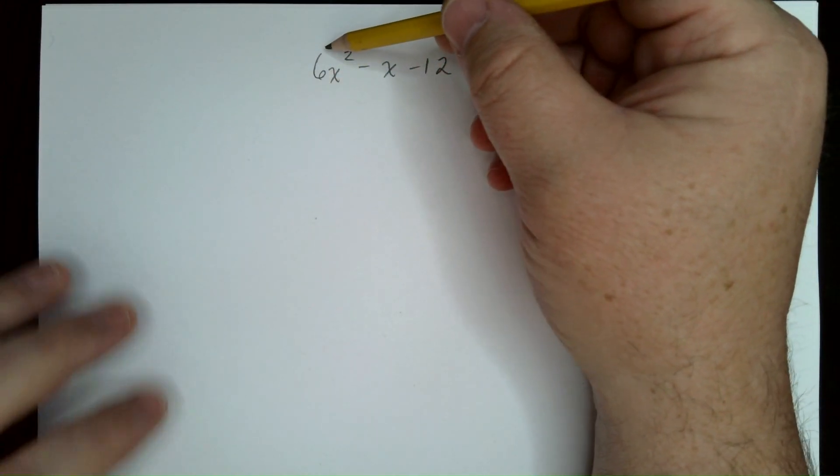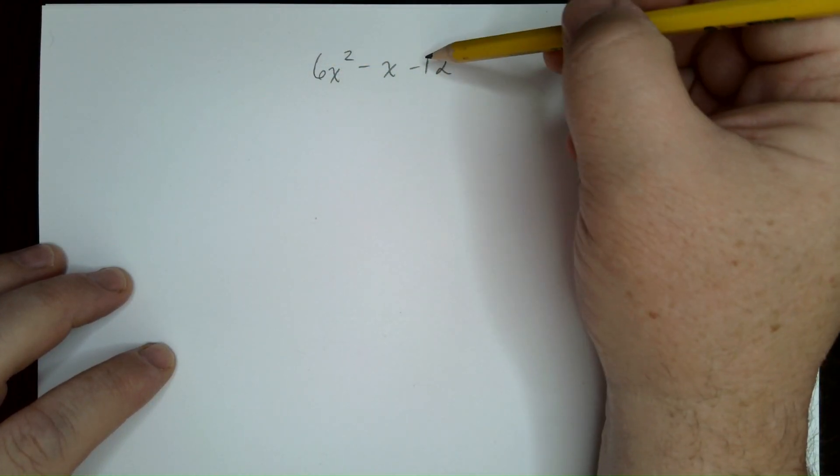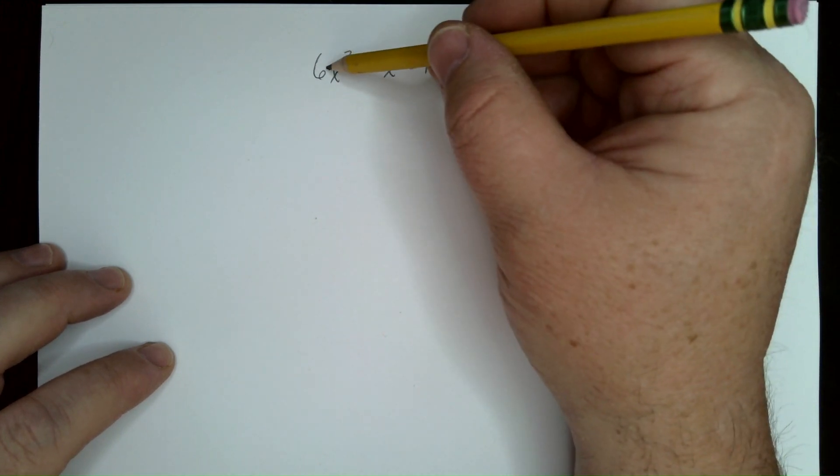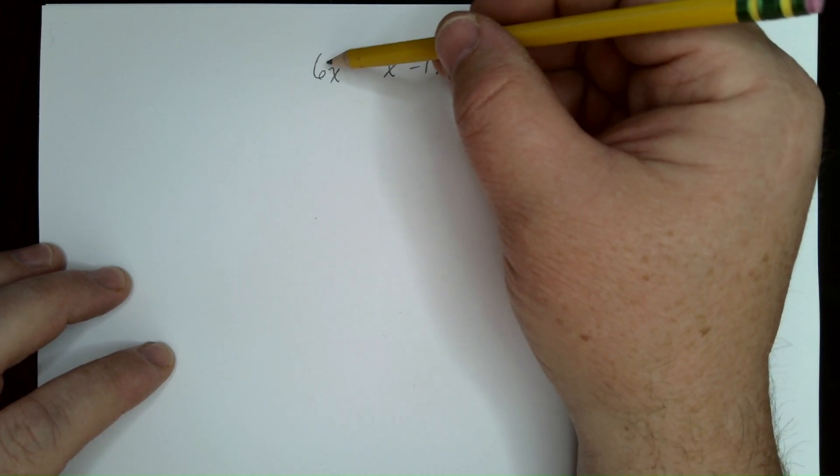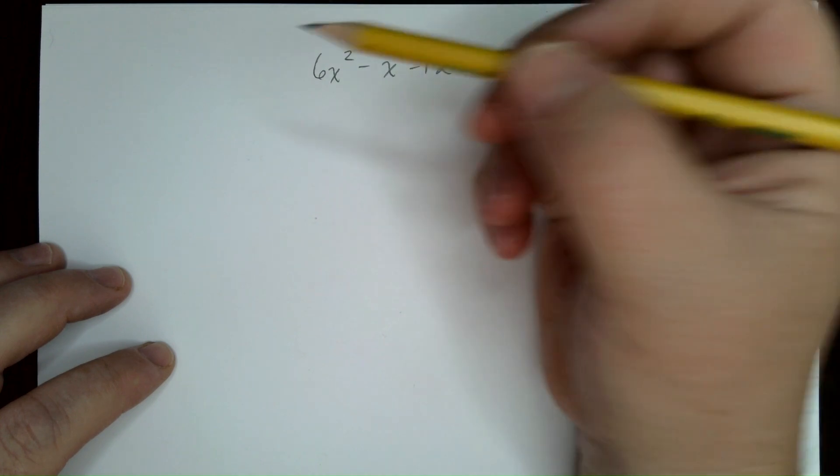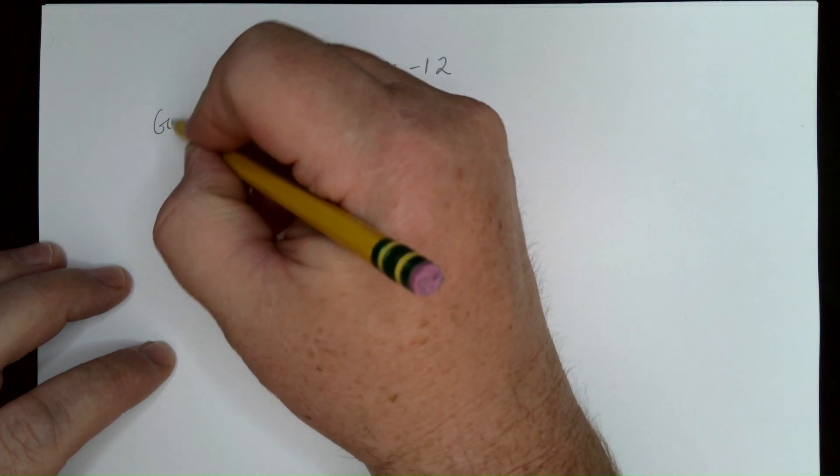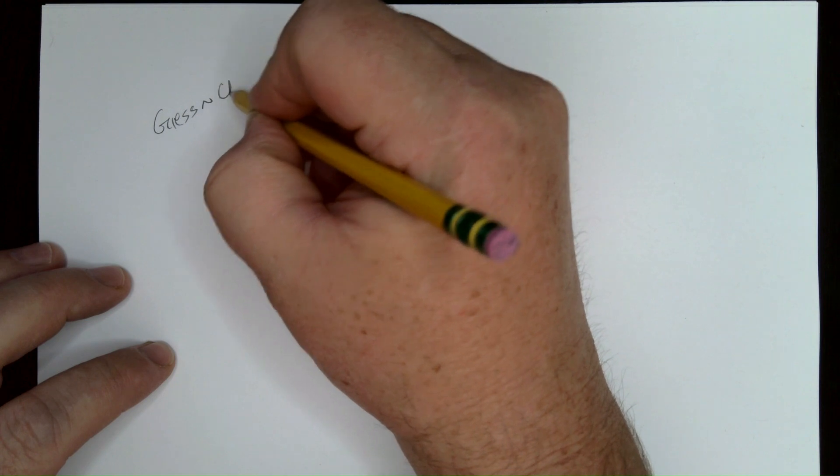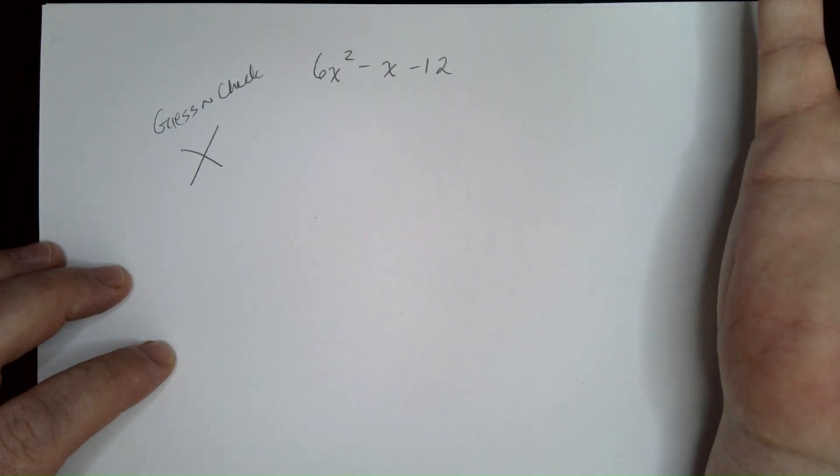I'm going to teach you a new way to factor this quadratic expression, or one like it where a is not equal to 1. Can't factor out a constant. And we're not going to use guess and check. We're not going to use like a box method. We're not going to use the x method where it's like this. We're not going to separate this to factor by grouping.